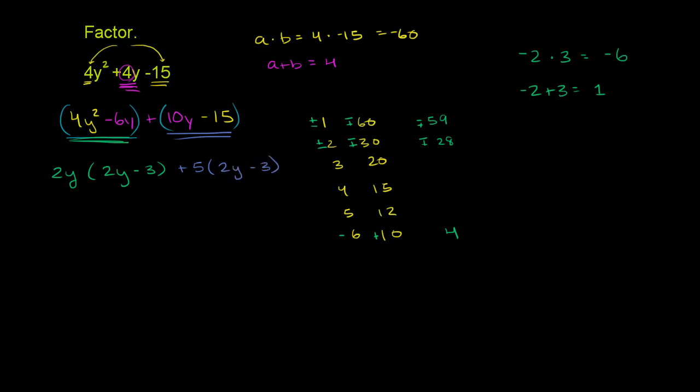Then let's factor this guy over here. We can factor out a 5. So this is plus 5 times 2y minus 3. And now lucky for us, we can factor out a 2y minus 3. So you have 2y minus 3 times 2y plus 5. And we are done.